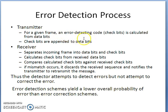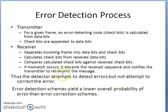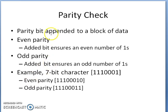The transmitter generates a frame and check bits are calculated from data bits. The check bits are appended to or interleaved into the data bits. At the receiver, the incoming frame is separated into data bits and check bits, and check bits are calculated from the received data bits. If the calculated check bits match the received check bits there is no error; if there is a mismatch, an error is detected and the receiver notifies the transmitter to retransmit the message.